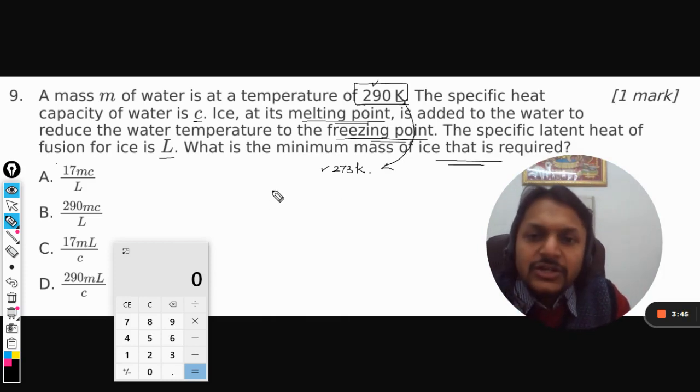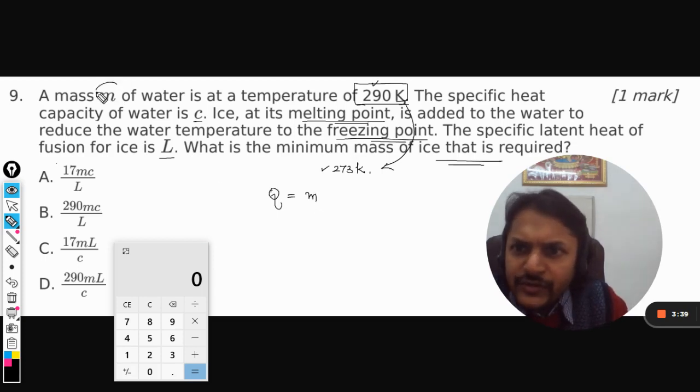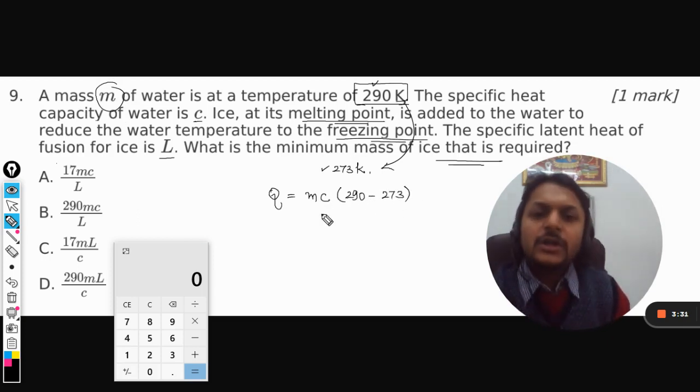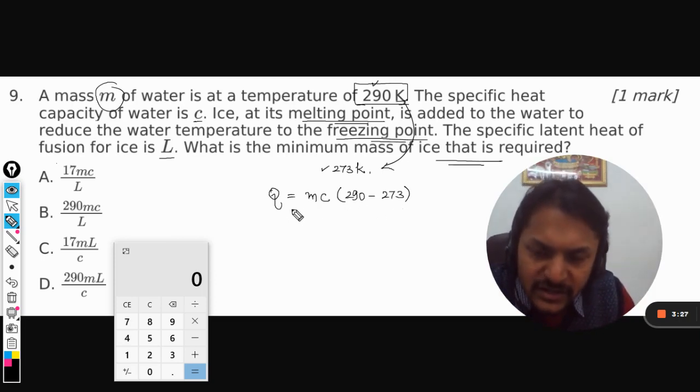We're now going to create both equations. Q equals, for the liquid, if m is the mass of the water given here, C is the specific heat, the temperature change has to be from 290 brought lower to 273, that is zero degrees centigrade.